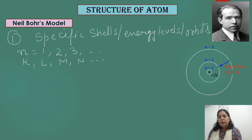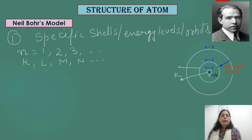For example, in this diagram, at the center there is a nucleus, then the first energy level, second energy level, and the third. The first energy level is also known as the K shell, the second is the L shell, and the third is known as the M shell, and so on.